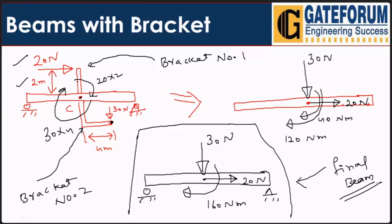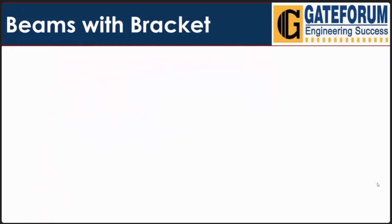So whenever we have brackets on a beam, the first step is to remove the bracket by parallel shifting of the load with the equivalent moment, and then find the shear force and bending moment as usual.